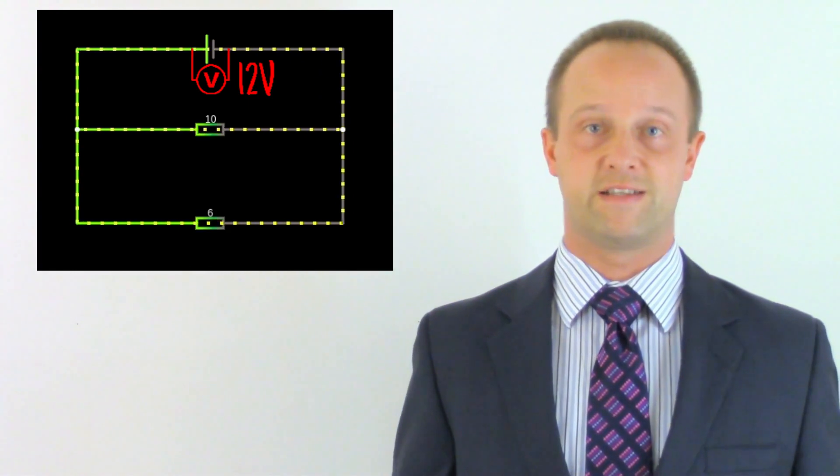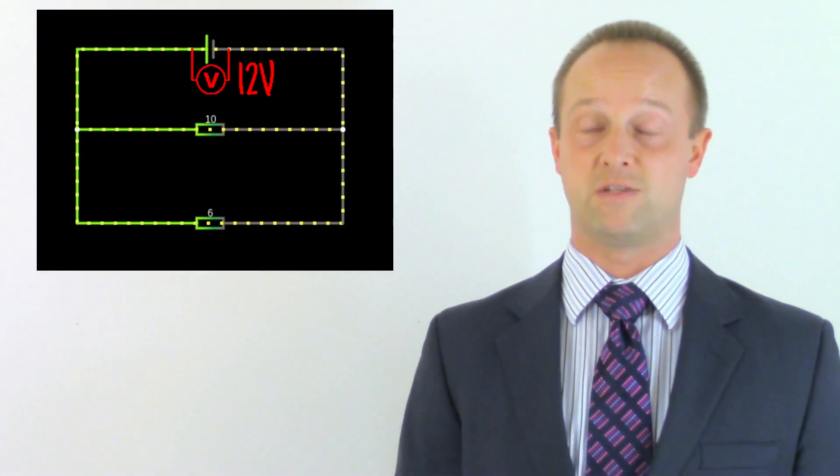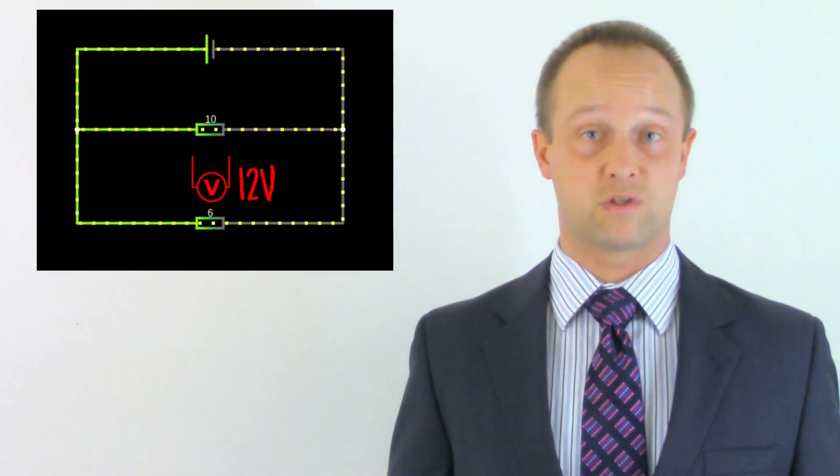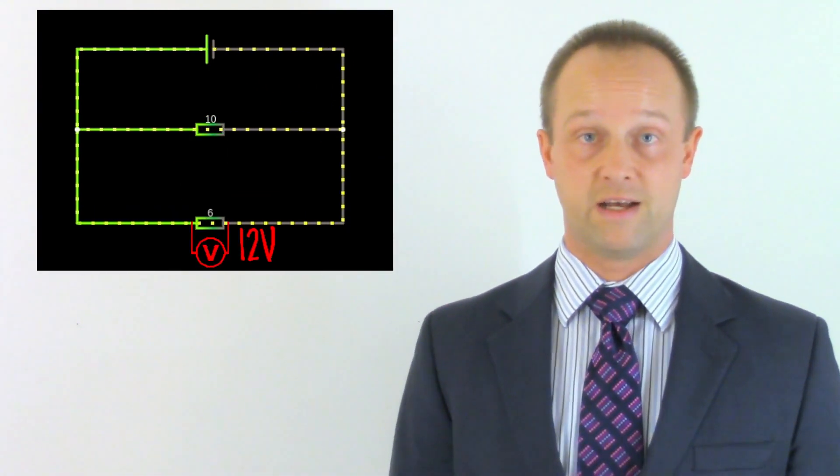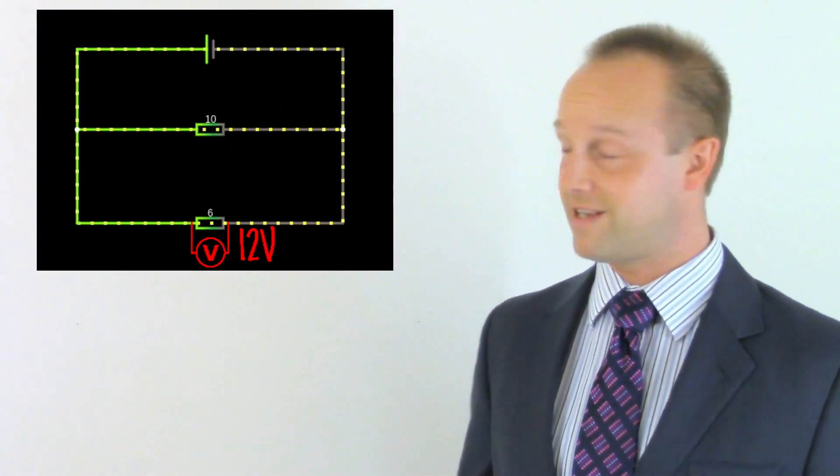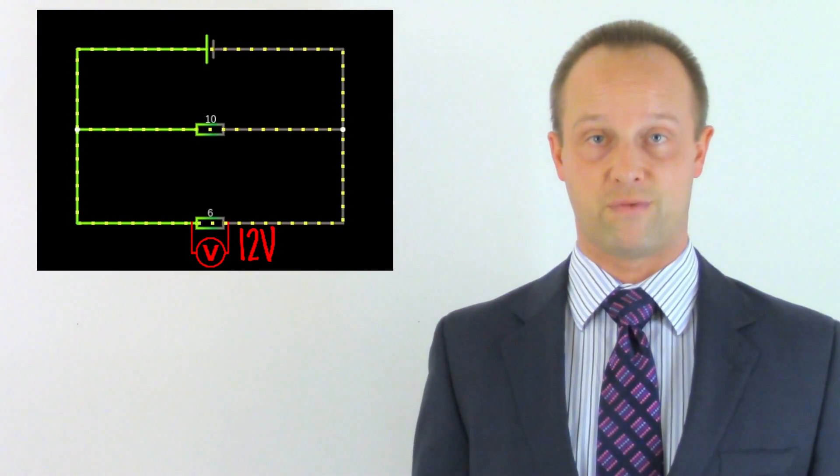The potential difference is the same across each individual branch of the circuit. It's 12 volts across this first branch, and it's 12 volts across that second branch, just because they're both connected to plus 12 volts on the left-hand side and 0 volts on the right-hand side.